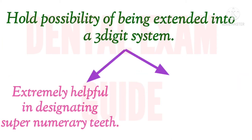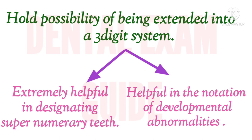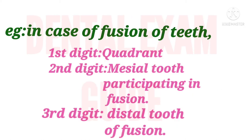The two-digit system holds the possibility of being extended into a three-digit system, which is extremely helpful in designating supernumerary teeth. It is also helpful in the notation of developmental anomalies. For example, the developmental anomaly of fusion of teeth is expressed by adding an extra number to the two-digit system. The first digit denotes the quadrant, the second denotes the mesial tooth participating in fusion, and the third denotes the distal tooth of fusion.